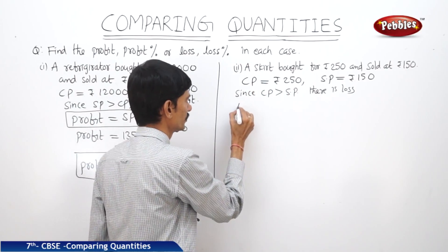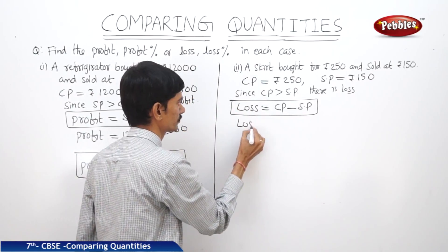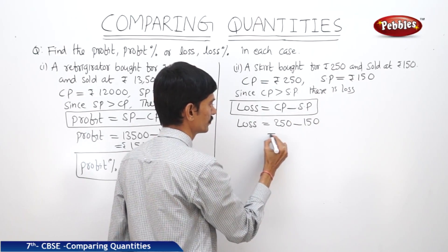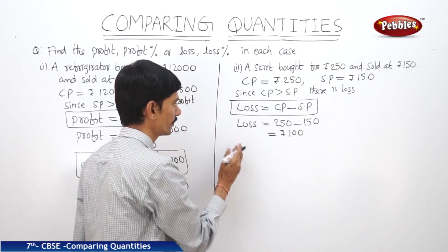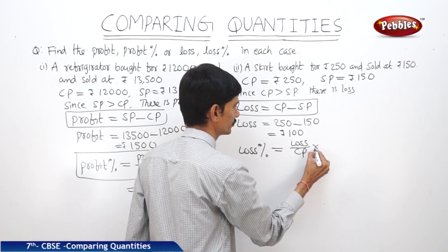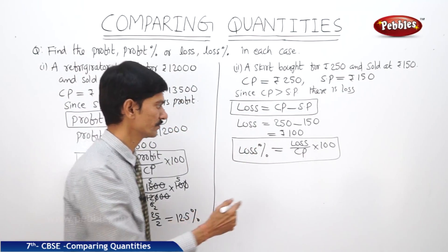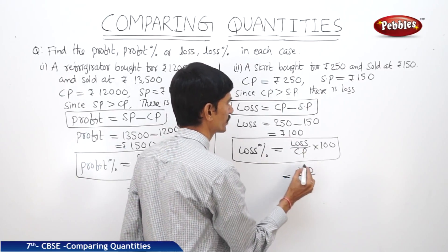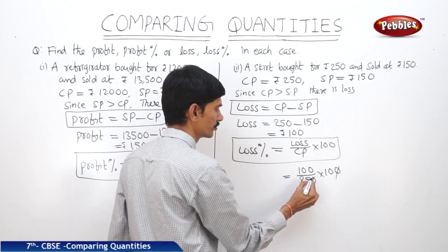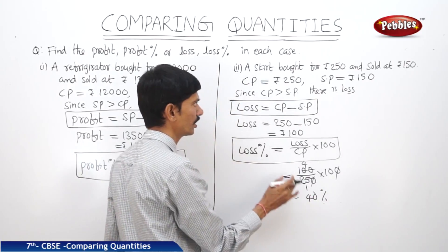Now we will find the loss amount. Loss equals cost price minus selling price. So loss equals 250 minus 150, which equals 100 rupees loss. Now we will find the loss percentage. Loss percentage equals loss by cost price into 100. Either profit percent or loss percent, both are calculated on the cost price. This equals 100 by 250 into 100, which gives 40%. There is 40% loss in the transaction.